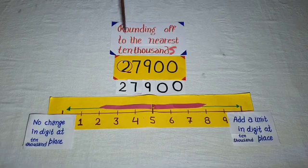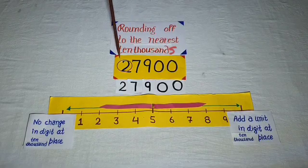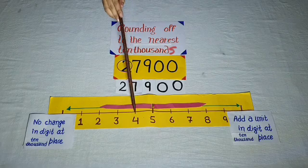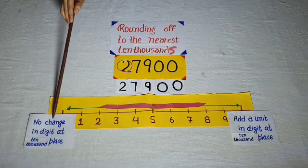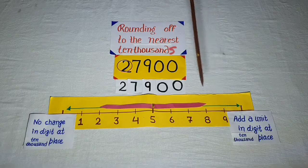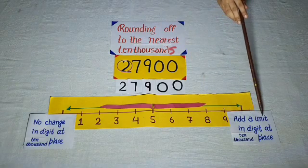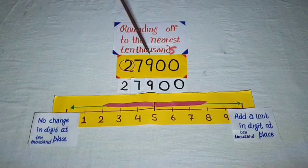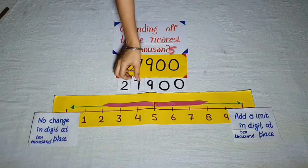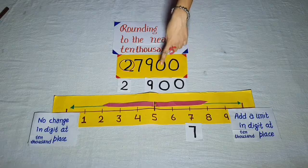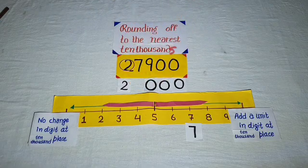Now we solve rounding to the nearest ten thousand. The number is 27,900. For rounding a number to the nearest ten thousand, look at the place of thousands. If the digit is 4, 3, 2, or 1 at the thousandths place, there is no change in the digit at the ten-thousandths place. If the digit is 5, 6, 7, 8, or 9, add a unit to the ten-thousandths place. Here, digit 7 is at the thousandths place, and put zero at ones, tens, hundredths, and thousandths places.